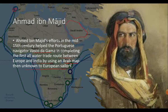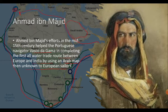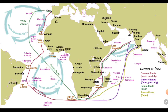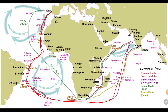At that time the Suez Canal did not exist, so all people coming from Europe had to take a much longer route around Africa. This was the outward route Vasco da Gama took from Lisbon to India, and this was the return route he took going back out of India.